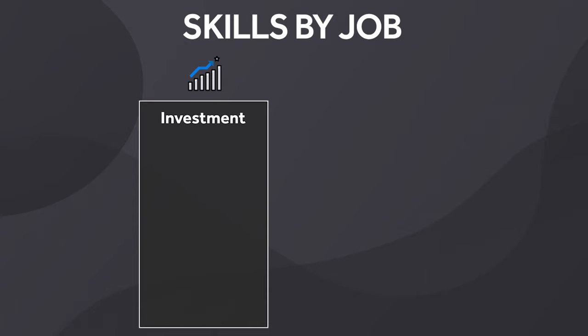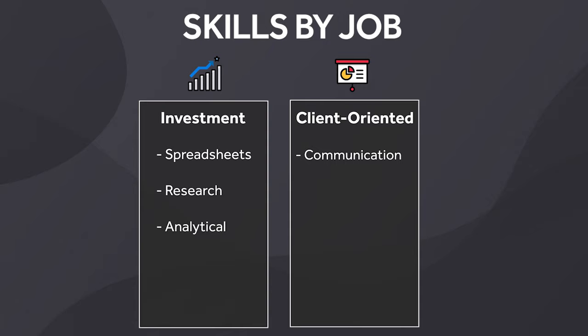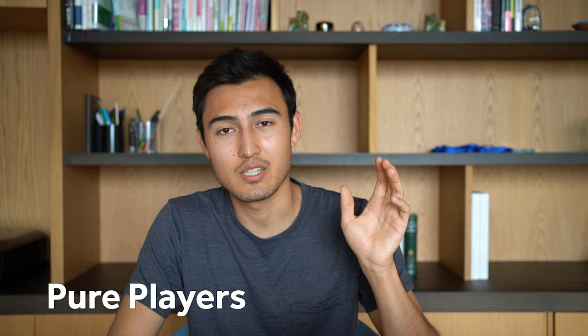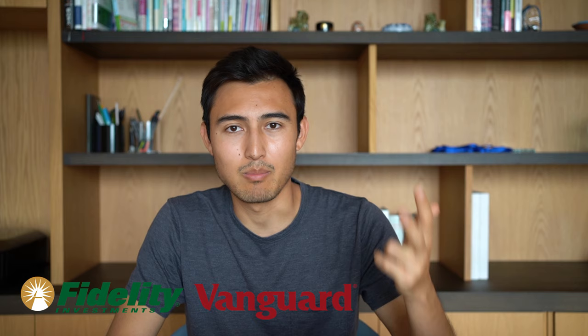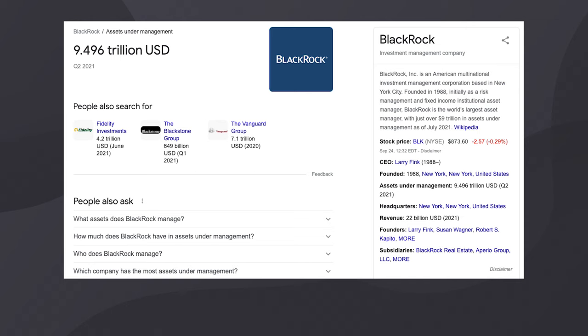For the investment side, spreadsheets, research, and strong analytical skills are essential. For the client-oriented side, communication, interpersonal skills, and the ability to sell are key. Support function skills vary widely — tech support and legal support require very different skill sets. When it comes to types of companies, there's a split between pure play asset managers — where asset management is the core business model — such as Fidelity, Vanguard, and BlackRock, which manage well above one trillion dollars in assets.